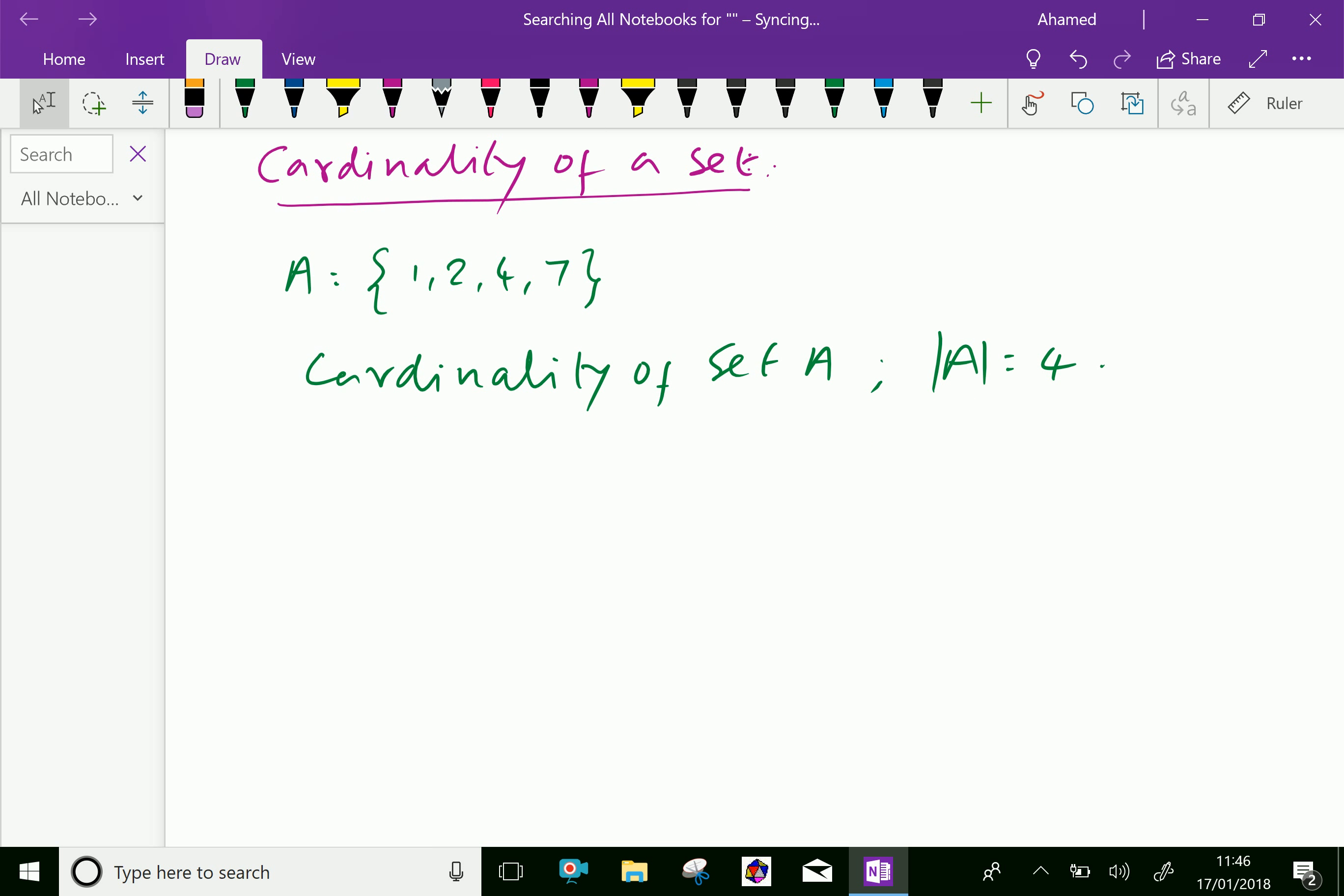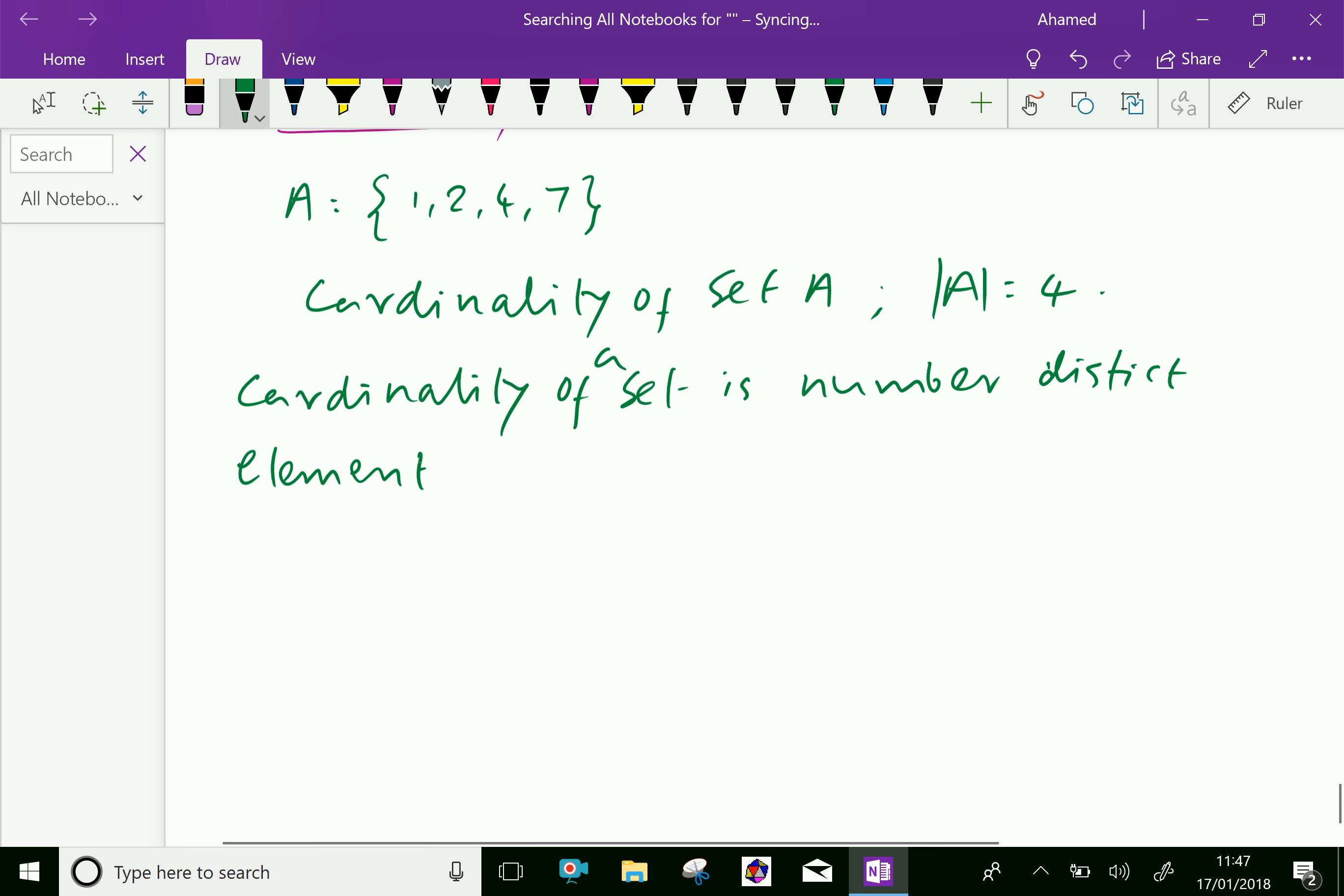We can define cardinality of a set A as the number of distinct elements in the set.